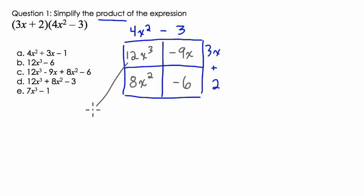So, now if we add all these pieces together, we have 12x to the third, all by itself. Then we have 8x squared and minus 9x. These two terms, they can't be added, they're not like terms. Minus 9x, and then finally over here, minus 6.